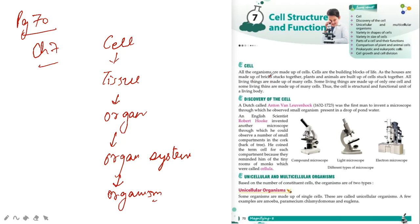So it's clear that all organisms are made of cells. Cells are the building block of life. Without it, life is not possible. Just like houses are made of bricks, plants and animals are made of cells.